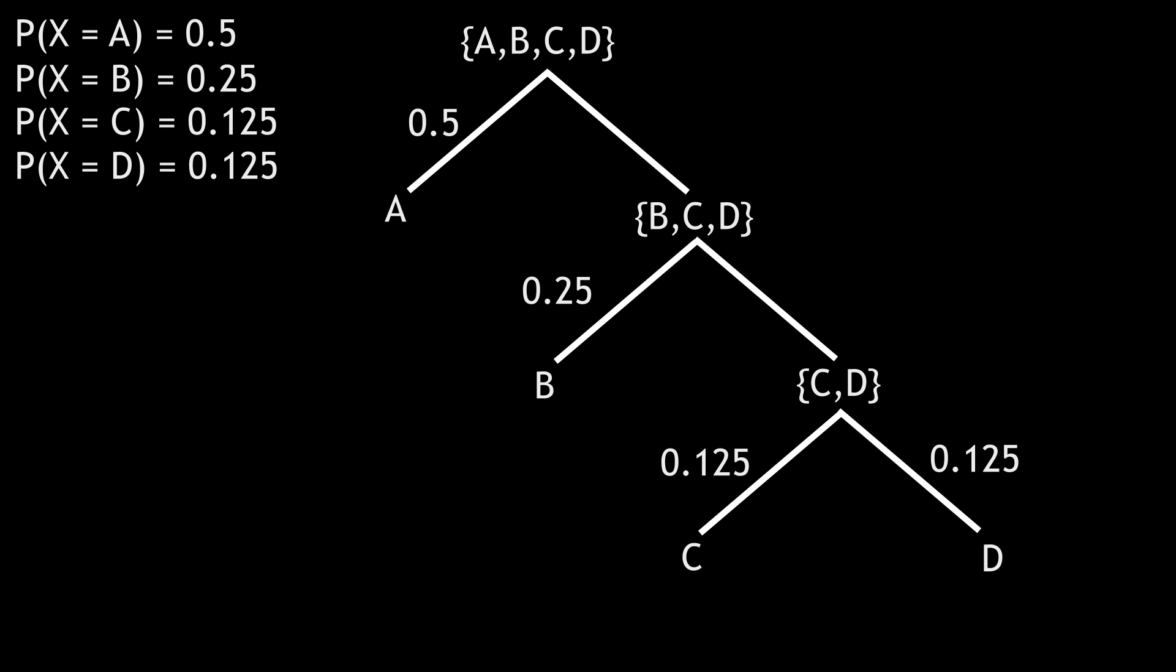If we take our weighted sum, we have the probability of A times one question, plus the probability of B times two questions, plus the probabilities of C and D times three questions. This comes out to 1.75. Now obviously you can't ask three quarters of a question, but you can think of these as a ratio. If chemist A asked 2,000 questions, chemist B would only have to ask 1,750 questions.